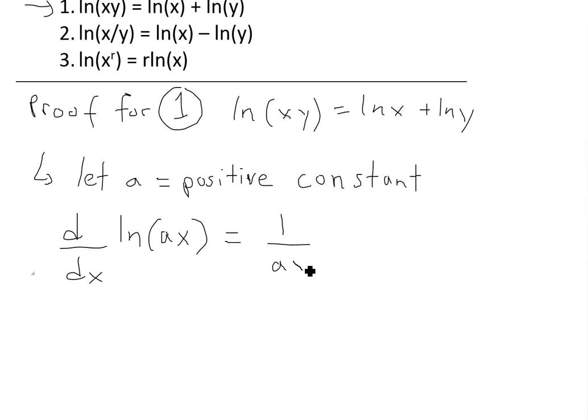And now using chain rule, derivative of the inside, that's just going to be, well, this is just a constant, so this is going to be times a. So then this will equal to, these cancel, equal to 1 over x.